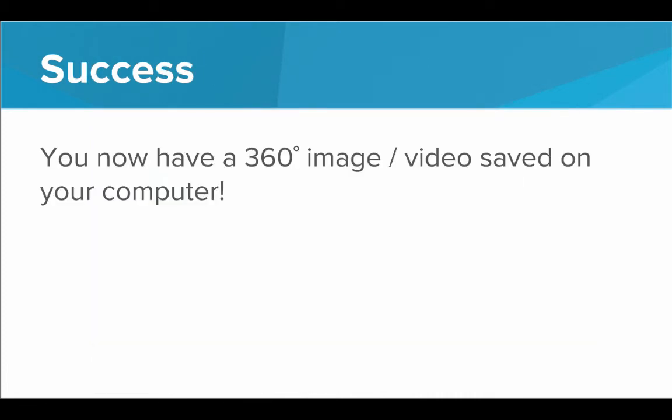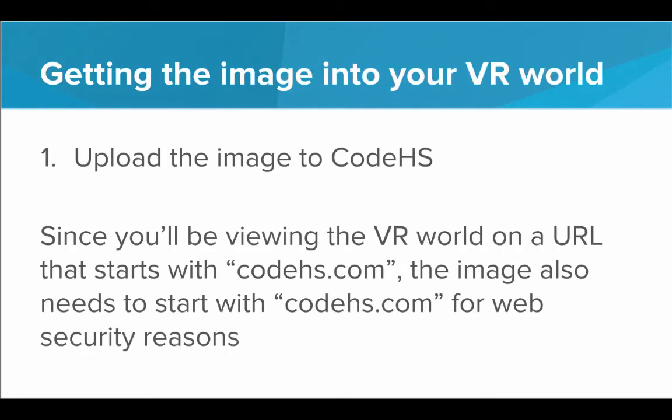Once you've done this, success — we have a 360 degree image saved on our computer. Whether we took it ourselves or found one online, let's talk about getting that image into our VR world. The first thing you'll need to do is upload that image to CodeHS. This is because you'll be viewing the VR world on a URL that begins with CodeHS.com, and for web security reasons the image also needs to start with CodeHS.com. If they are on different domains, the browser doesn't allow it. So we need to upload the image to CodeHS to get a CodeHS URL for the image.